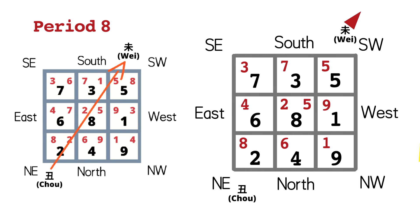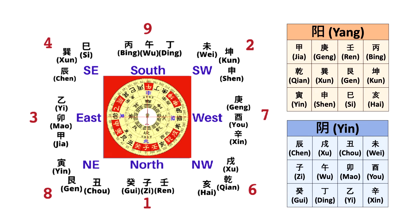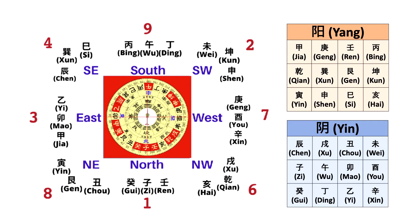Now, let's see how to fly the facing star. First, we need to check where number 5 is on the luopan. Number 5 is actually in the middle of the luopan and has no direction. Therefore, we use the facing direction Wei directly to check whether it belongs to yin or yang. As we can see on the table, Wei is yin, so the facing star's flying pattern is also reversed.